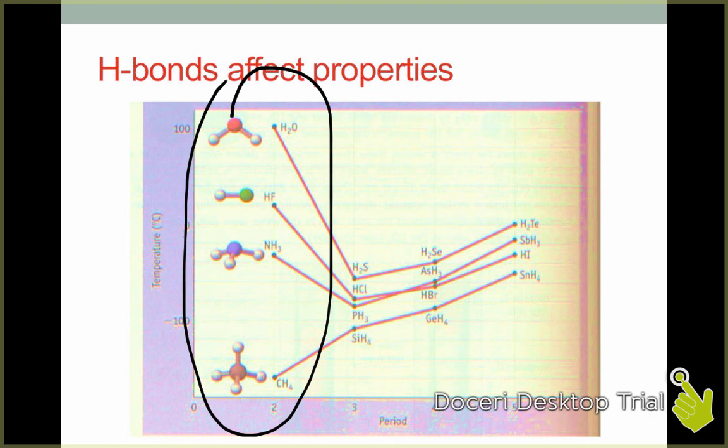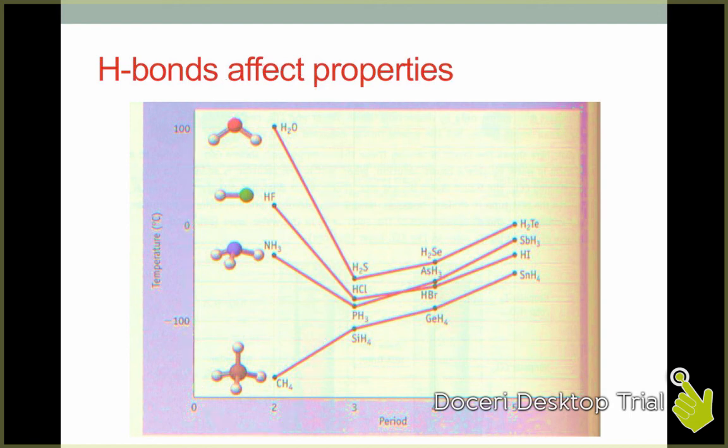CH4 does not exhibit hydrogen bonding, so one CH4 molecule is not very strongly attracted to its neighbors. H2O, HF, and NH3, however, all contain an H-O, H-F, or H-N bond, causing them to be very polar molecules able to hydrogen bond with neighboring molecules. This results in an exceptionally high boiling point for each of these substances. You might also compare the boiling points of H2O with H2S, H2Se, and H2Te — all hydrogens bonded to atoms within the same group. H2O, due to its hydrogen bonding, exhibits far stronger intermolecular forces, as evidenced by its much higher boiling point, than other molecules of similar structure.